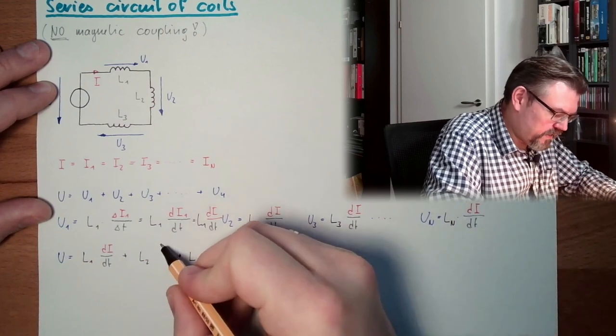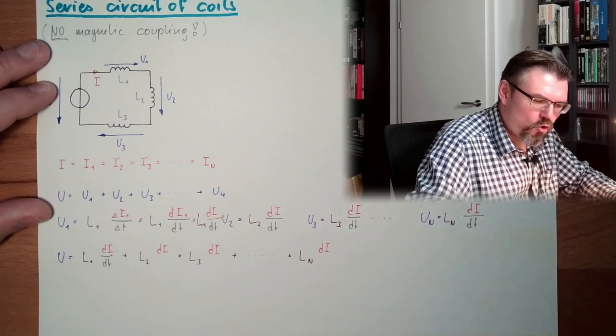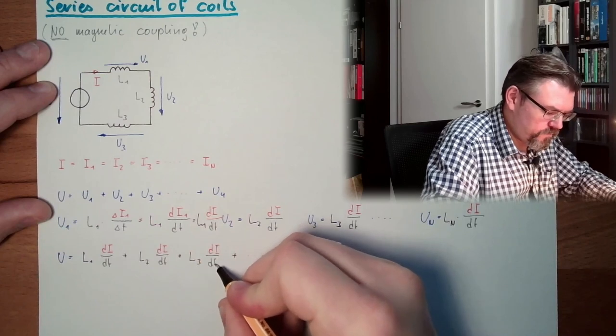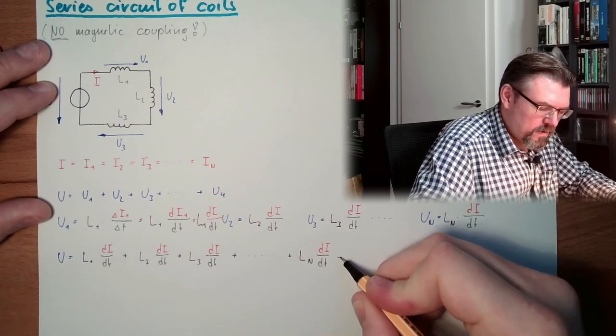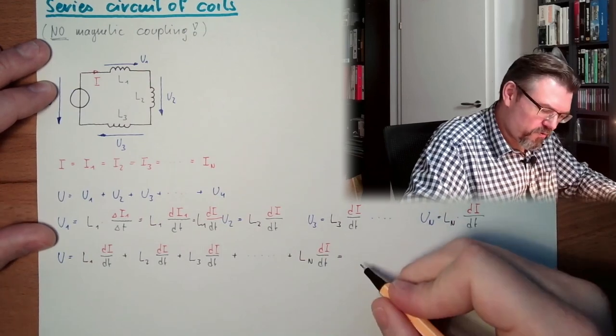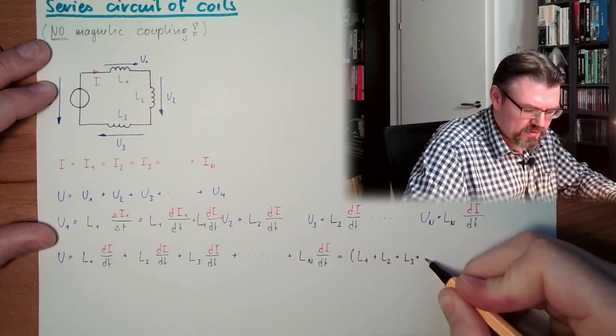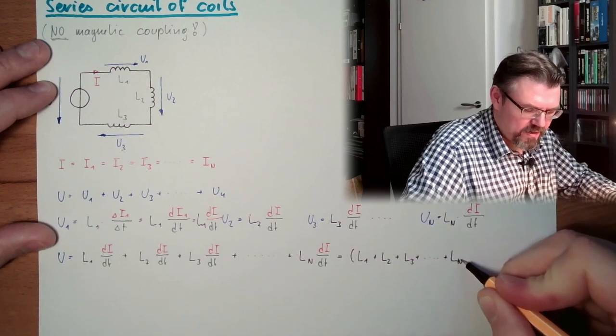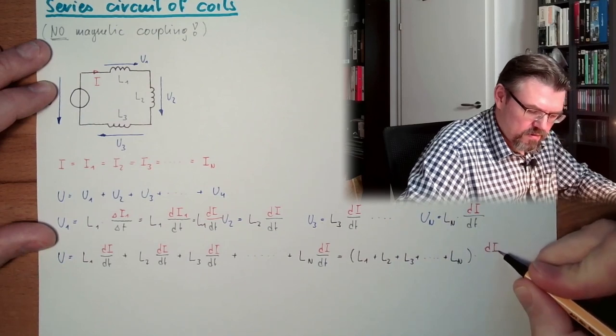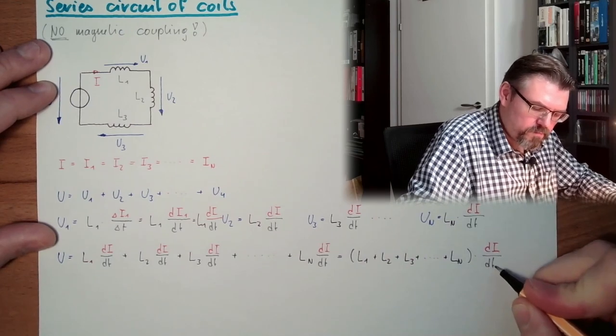And we always had the change rate of the same current in there. Now we can factor out this stuff, because it was already pretty much to write. L1 plus L2 plus L3 plus and so on, plus LN, multiplied by dI by dT.